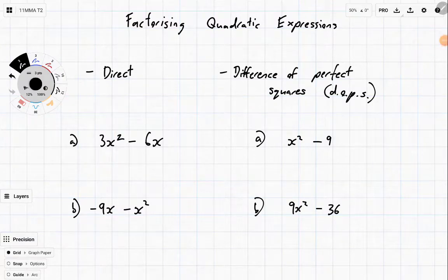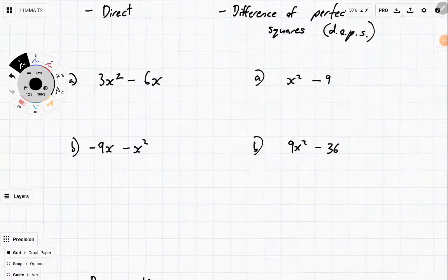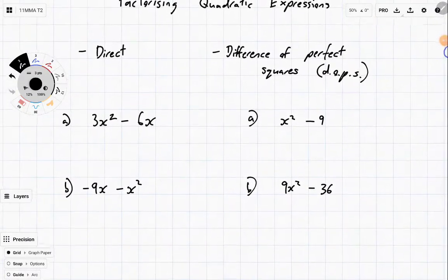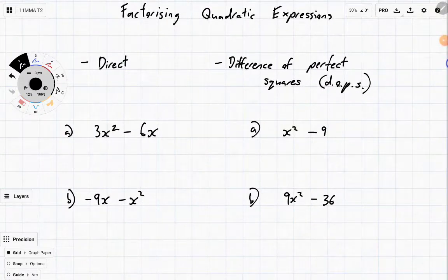Alrighty, so today we're going to be looking at factorizing quadratic expressions. In particular, we're going to be looking at three different methods: direct, difference of perfect squares which gets abbreviated to DOPS, and the third method is decomposition. These are the three different basic methods of factorizing quadratic expressions without having to use the quadratic formula.